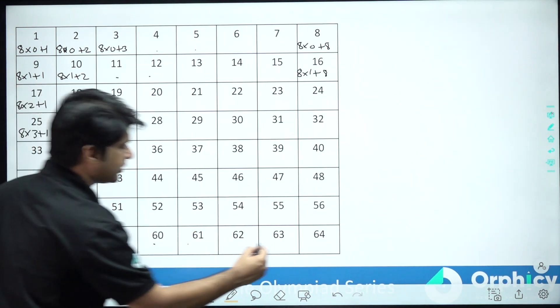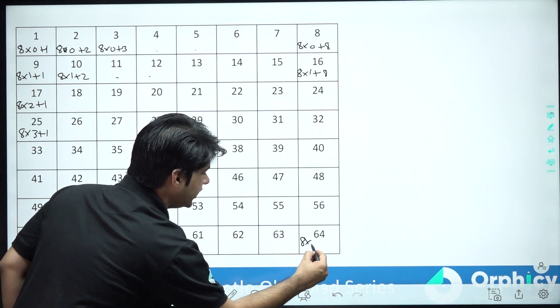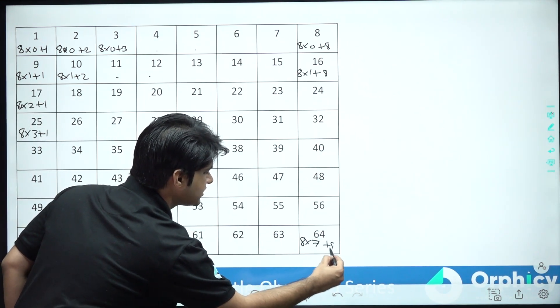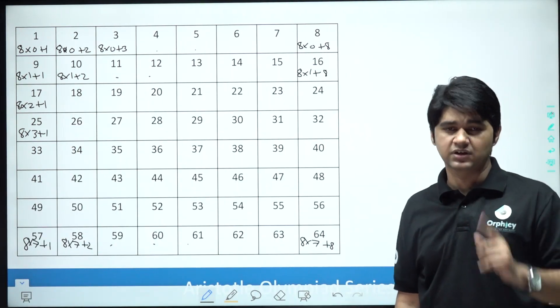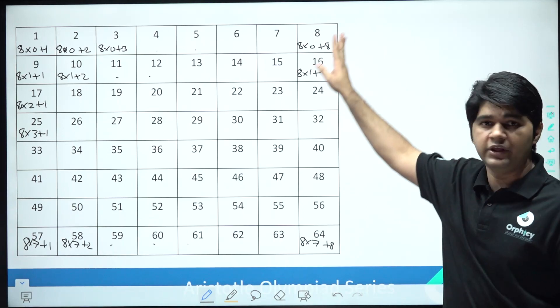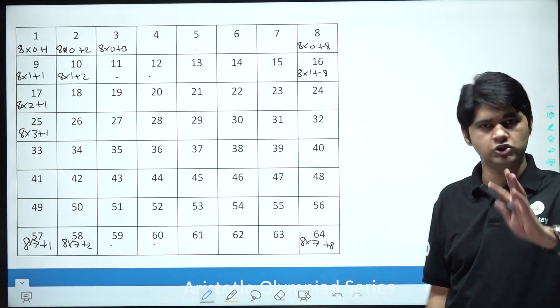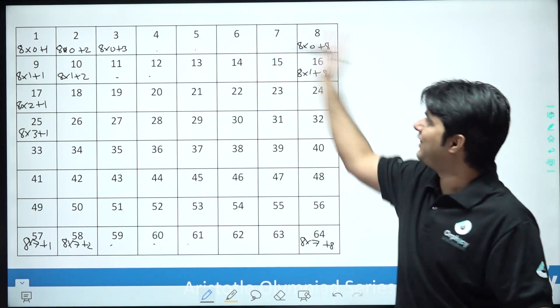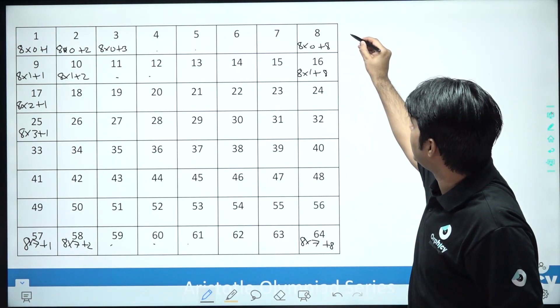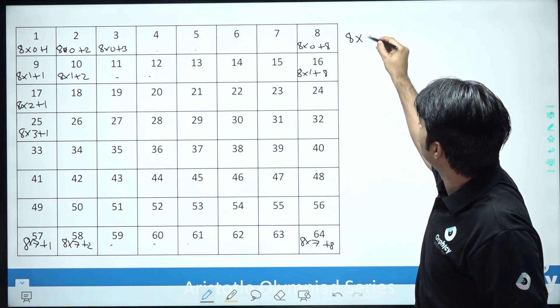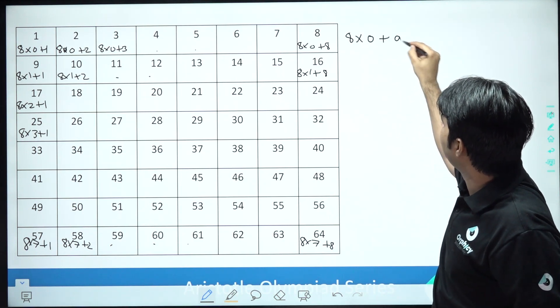Now we are given that we need to select 8 numbers such that there is 1 from each row and 1 from each column. Now let's say in the first row, I can express that number as 8 x 0 plus A1.